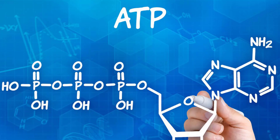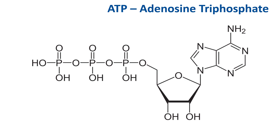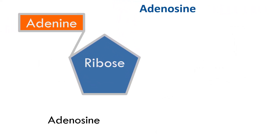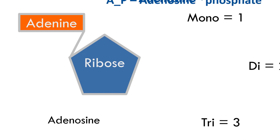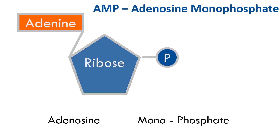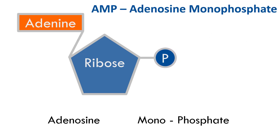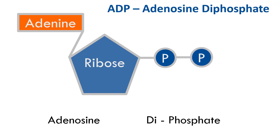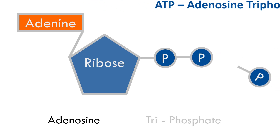ATP, adenosine triphosphate, is the energy currency of the body — a molecule that powers cellular function. Not calories, not carbohydrate, not fat, not protein; this is the only currency the body knows how to use. ATP is made up of an adenine base combined with a five-carbon ribose sugar, forming adenosine, plus phosphate groups. It can exist as AMP (monophosphate, one phosphate), ADP (diphosphate, two phosphates), or ATP (triphosphate, three phosphates).